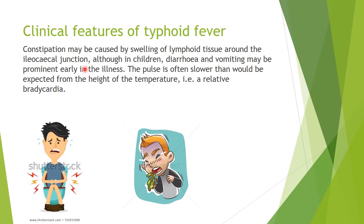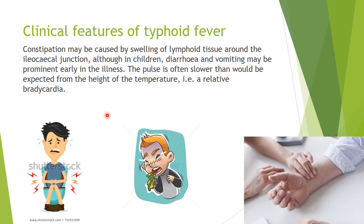The diarrhea and vomiting will be prominent early in the illness. If he were an adult, he would have constipation. Normally with increasing temperature the pulse is also rapid, but in the case of typhoid, relative to the temperature, the pulse is slower — this is called relative bradycardia. The pulse is often slower than would be expected from the height of the temperature. So Jack will have diarrhea, vomiting, and relative bradycardia.